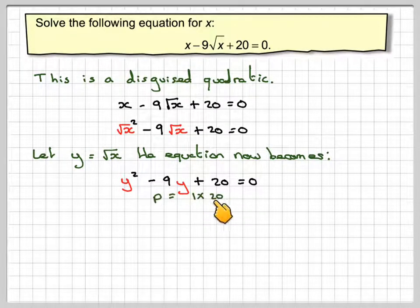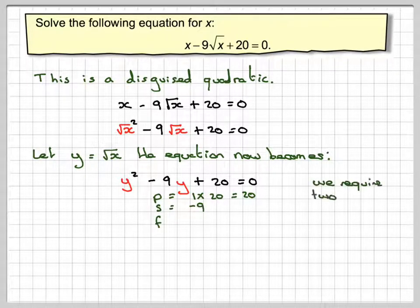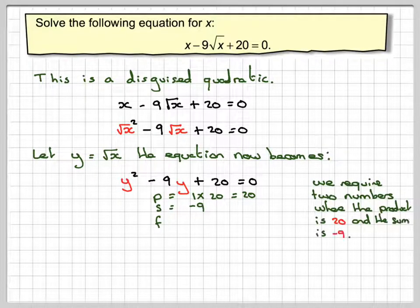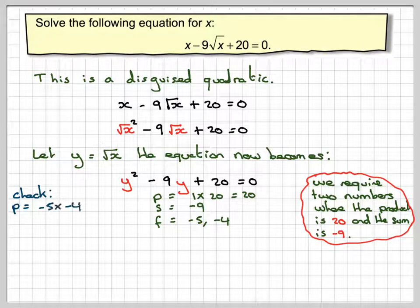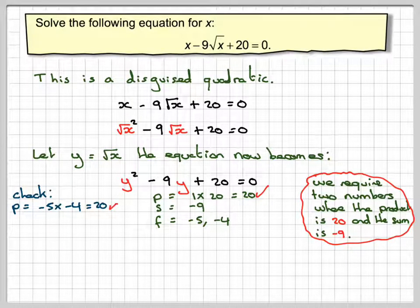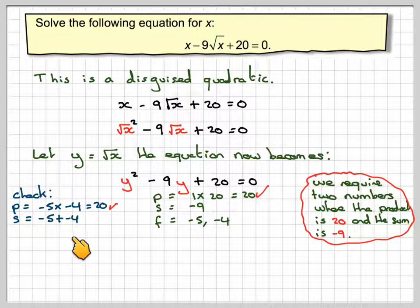So we want two numbers where the product is 20 and the sum is minus 9. So we've got minus 5 and minus 4. Check. Minus 5 times minus 4 does give 20, so it's OK. And minus 5 plus minus 4 does give minus 9.